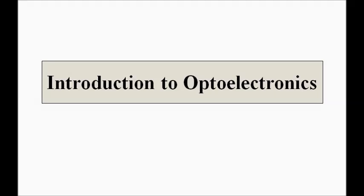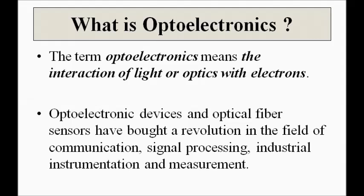The first question that comes to mind is: what is optoelectronics? From the name itself you can make out what it actually means. Optoelectronics is the field of science and technology formed by the union of two separate fields — optics and electronics. Optics and electronics combined together form a new, separate, and very vast field, which is the term optoelectronics.